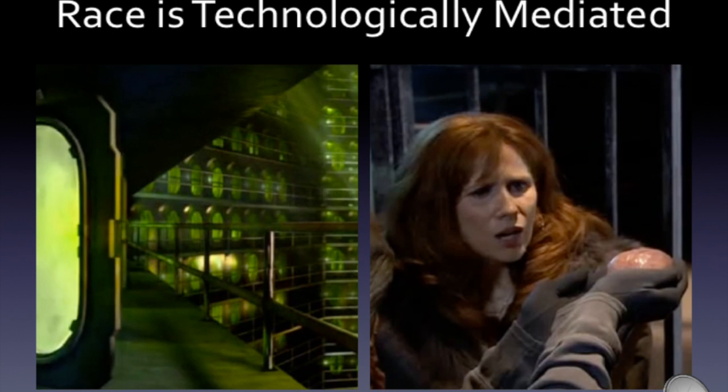The human clones are literally brought into existence through the biomedical technologies of the Sisters of Planitude. Further, they exist as part of a machine, shown on the left, that infects them with every disease in the galaxy.